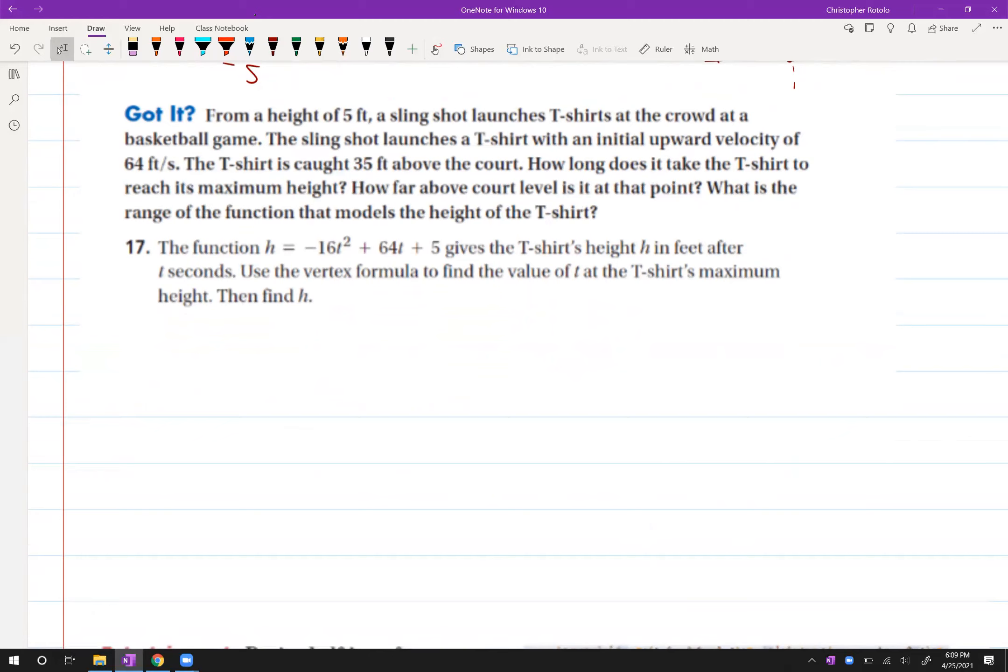All right. So we're going to have a, you know, we're going to go to a basketball game and they're going to take a slingshot and they're going to launch these t-shirts all over the place. So we have an upward velocity, 64 feet. So it went in, t-shirts caught 35 feet above the court.